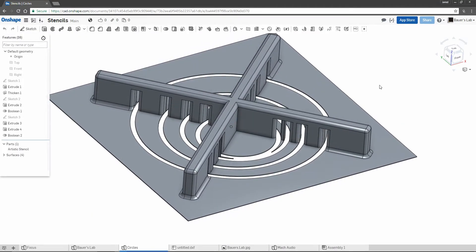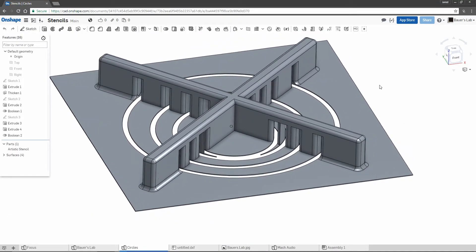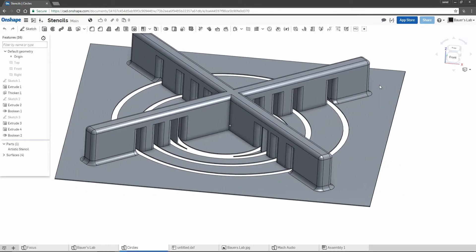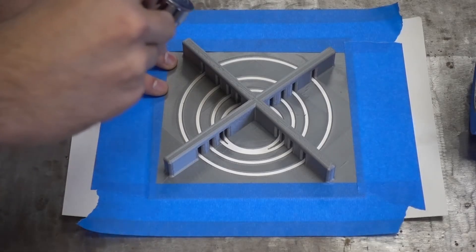There. That looks pretty good. I should still be able to get paint in those slots there, I hope, anyway. So let's just print it and see how it works out. I'm just going to tape it to this piece of paper and we'll see how it goes.